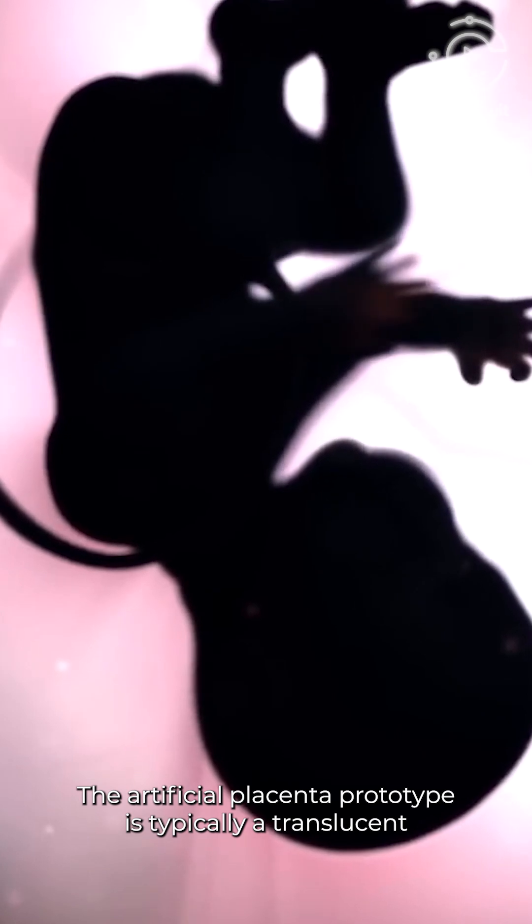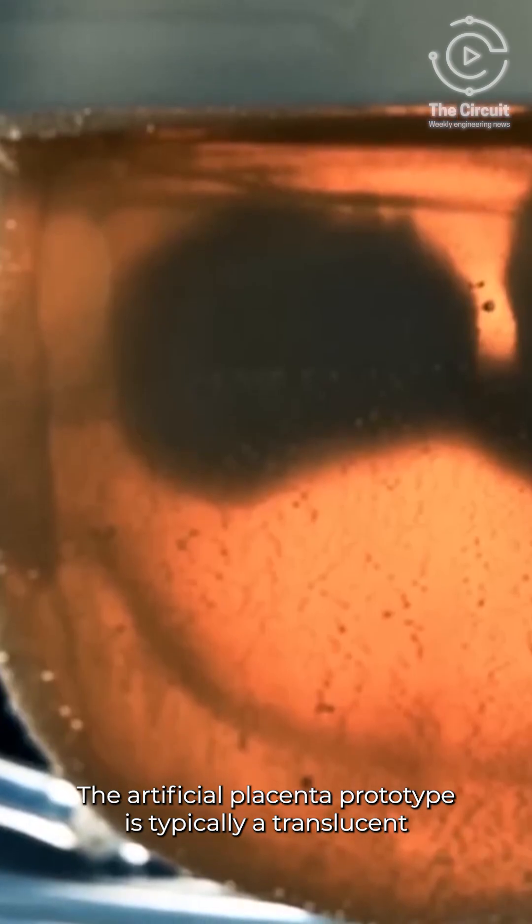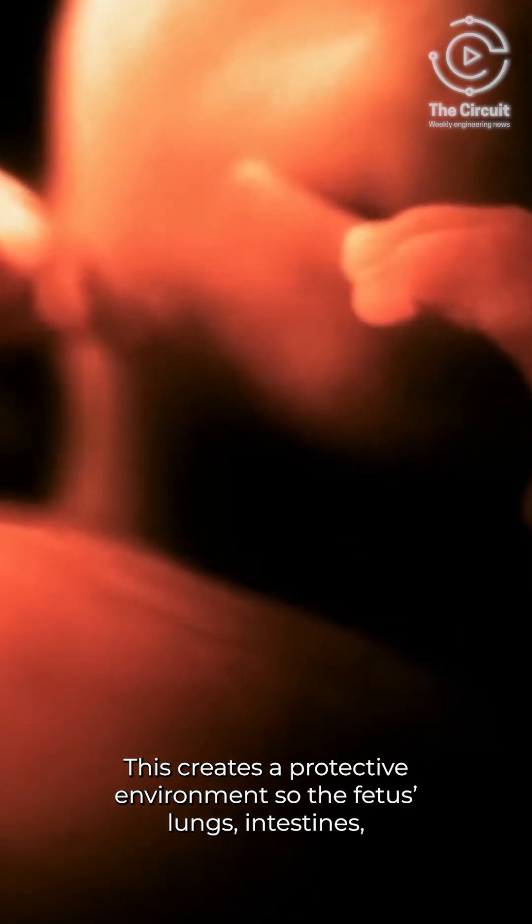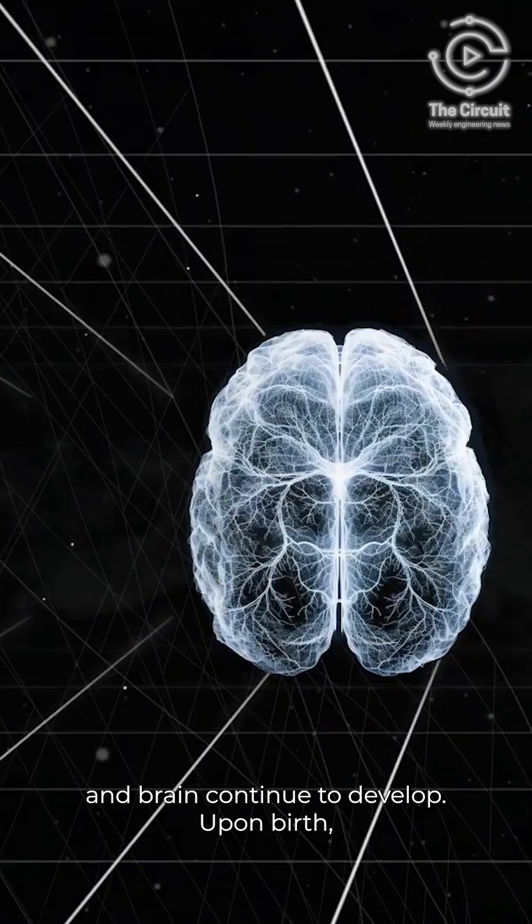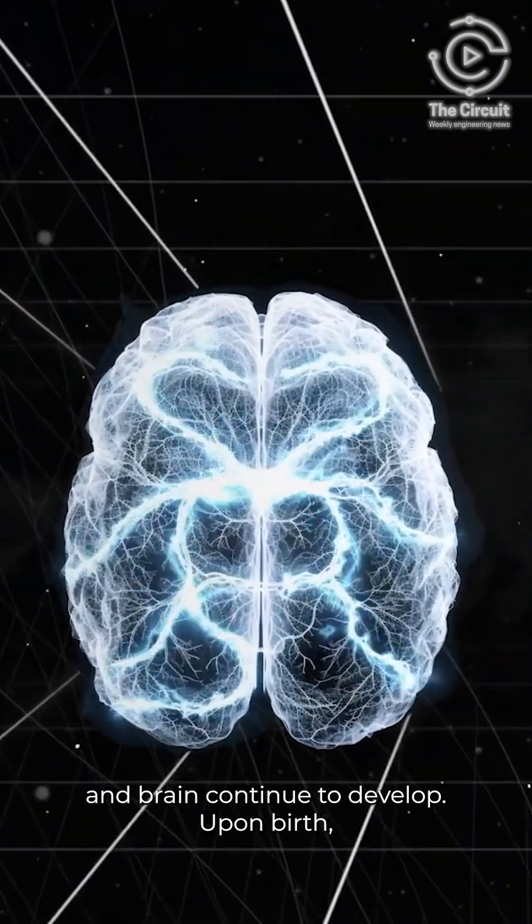The artificial placenta prototype is typically a translucent container made of biocompatible material. This creates a protective environment so the fetus' lungs, intestines, and brain continue to develop.